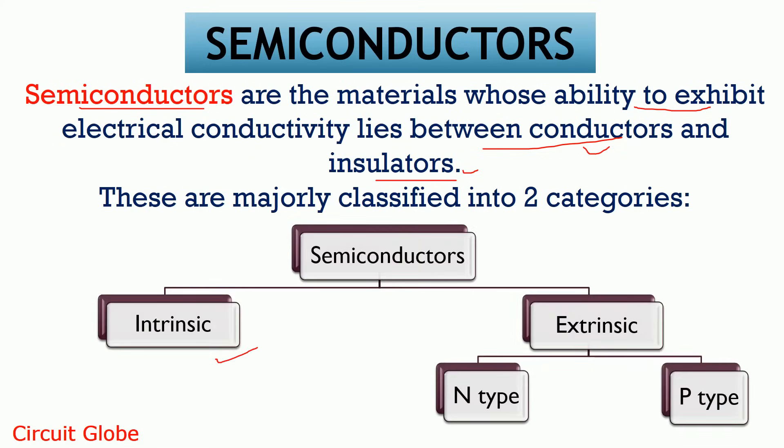Semiconductors are majorly classified into two categories. The first one is intrinsic and the second one is extrinsic. Further, this extrinsic semiconductor is classified into N-type and P-type, and we will discuss these two types in detail later.